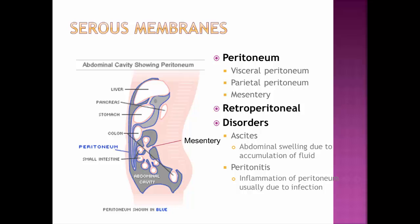A couple of disorders are associated with serous membranes. Ascites is abdominal swelling due to accumulation of fluid — we'll discuss this more with the cardiovascular system. Peritonitis is inflammation of the peritoneum, usually due to infection. This is commonly seen with appendicitis: if the appendix ruptures, its contents spew into the abdominal cavity, often including bacteria, leading to a serious infection within the abdominal cavity.